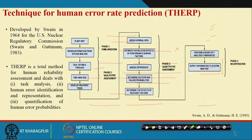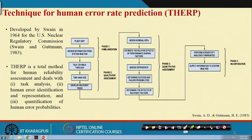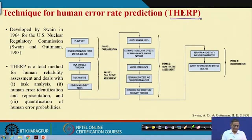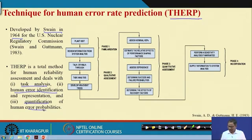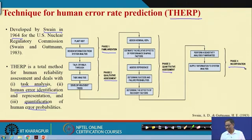Now let us discuss THERP. THERP stands for Technique for Human Error Rate Prediction. This was developed by Swain in 1964 for nuclear plants, and it basically comprises task analysis, human error identification, and quantification of human error probabilities. Swain and Guttmann in 1983 gave the complete picture of THERP. There are four phases: the first phase is plan familiarization, the second is qualitative assessment, the third is quantitative assessment, and the fourth is incorporation.